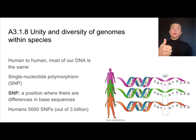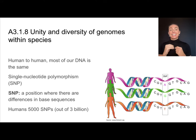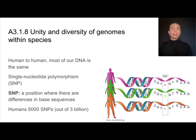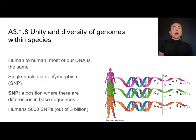Within a species, you're going to find that most of the DNA is the same — the vast majority, like well over 99% of your DNA and my DNA, is identical. Why is it that we look different and have different traits? Those bits of different DNA are found in positions called single nucleotide polymorphisms, or SNPs. These SNPs are exactly what they sound like: single nucleotides — just one base — where polymorphism means there might be many different versions. Those are spots in our DNA where people might have different nucleotides.